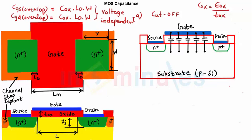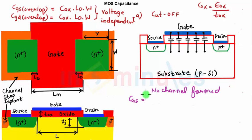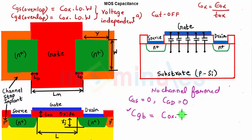In the cutoff region, no channel is formed. By definition, CGS is the gate-to-channel capacitance seen between gate and source — but there is no channel, so CGS equals zero. CGD is also zero. However, CGB is present: the SiO2 capacitance exists between the gate and the substrate, so CGB equals COX times W times L.